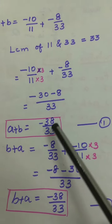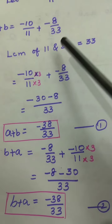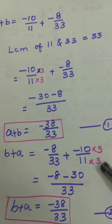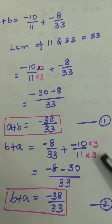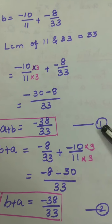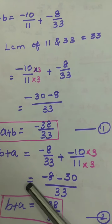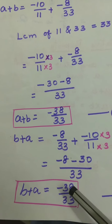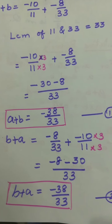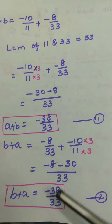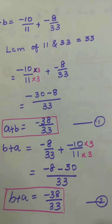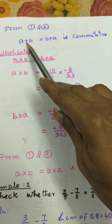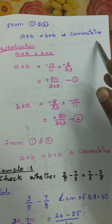Next, B plus A equals minus 8 by 33 plus minus 10 by 11. Finding the LCM and multiplying minus 10 by 3 gives minus 30 by 33. So B plus A also equals minus 38 by 33. From equations 1 and 2, A plus B is equal to B plus A, so addition is commutative. This proves that A plus B equal to B plus A is commutative.